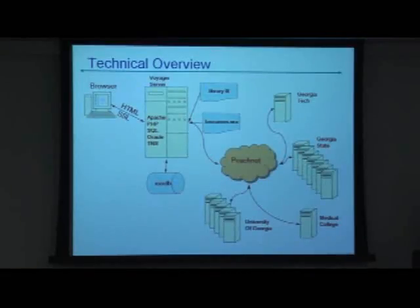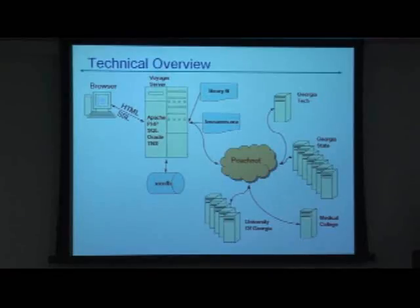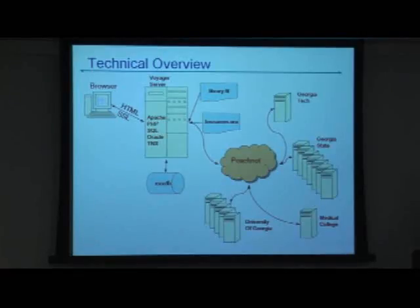When we went to universal borrowing several years ago, we had a requirement to be able to print reports for UB that didn't just get data from your local catalog. So we worked on it for a while and came up with a way to do it through a PHP web report, so that a report written for a particular local institution could go out and grab data from any institution in the USG.